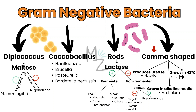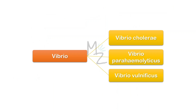Comma-shaped bacteria are further subdivided based on certain criteria. If a bacterium produces urease, it's H. pylori. If it grows at 42 degrees Celsius, it's Campylobacter jejuni. And if it grows in alkaline media, it's Vibrio cholerae. Vibrios include different species, but the ones we are concerned with are Vibrio cholerae, Vibrio parahaemolyticus and Vibrio vulnificus.